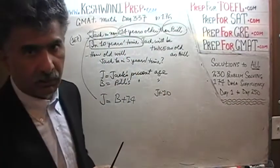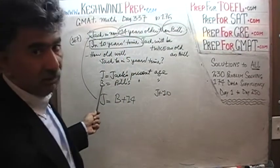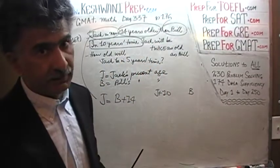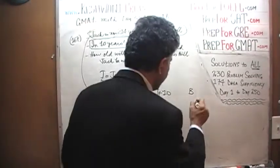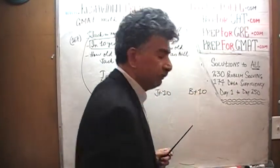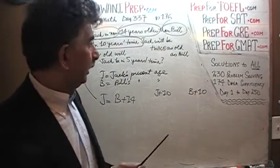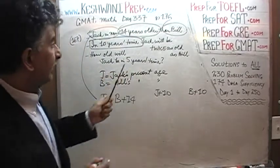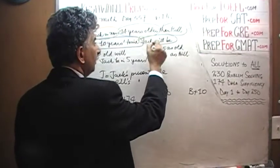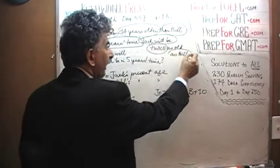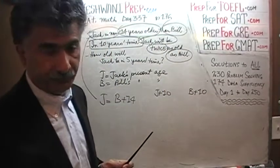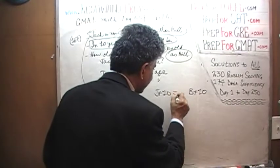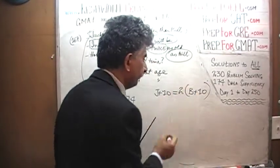What about Bill? If Bill's current age is B years, then in 10 years' time, B will also be 10 more than what he is today — B plus 10, obviously. And we are told that at that point in time, Jack's age — J plus 10 — will be twice as old as Bill will be then. Bill's age at that time is B plus 10, so Jack is going to be two times as much. That's all.